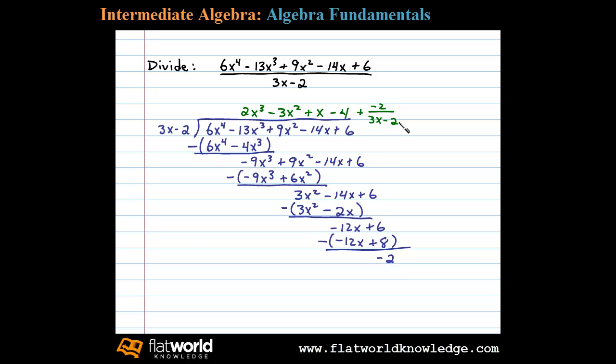And so this is our answer. All that is left to do is present it with the remainder term here. Instead of plus a negative term, we'll say minus this. And so our answer is 2x cubed minus 3x squared plus x minus 4 minus 2 over 3x minus 2.